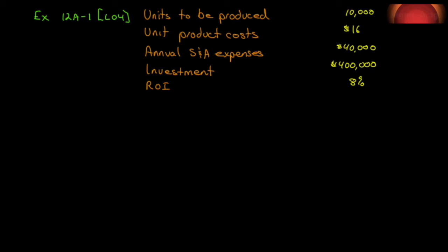Let's do a few exercises from the appendix. Exercise 12A1: absorption costing and total variable costing approaches to setting a selling price — learning objective four. Nolan Limited is considering introducing a new product. Management has gathered the following information: units to be produced 10,000, unit product cost $16, annual selling and administrative expenses $40,000, investment required $400,000, and management expects an 8% ROI. Part one: using the absorption costing approach to cost-plus pricing, compute the markup the company will have to use to achieve the desired ROI.